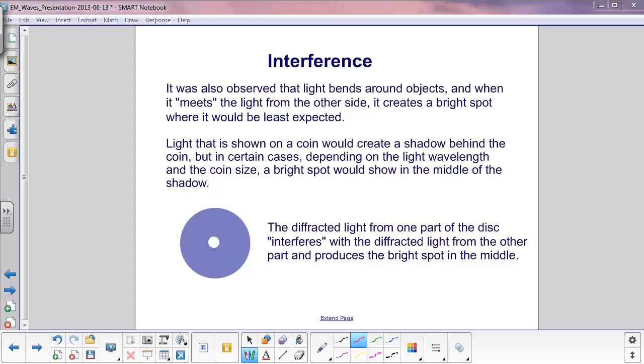But in certain cases, depending on the light wavelength and the coin size, you would see a bright spot right in the middle of the shadow. In this case, what's happening is the bent light or the diffracted light from one part of the disk would interfere with the diffracted light from the other part and produce a bright spot in the middle.